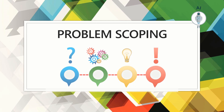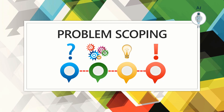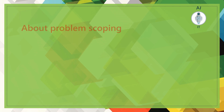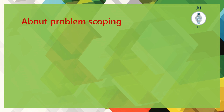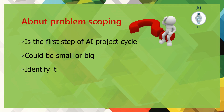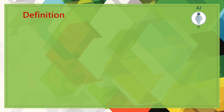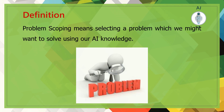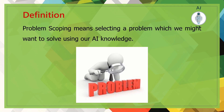In this session, let us learn the first stage of the AI project cycle: problem scoping. We are surrounded by problems — they could be small or big, sometimes ignored or sometimes critical. Many times we become so used to a problem that it becomes a part of our life. Identifying such a problem and having a vision to solve it is what problem scoping is all about. Problem scoping means selecting a problem which we might want to solve using our AI knowledge.